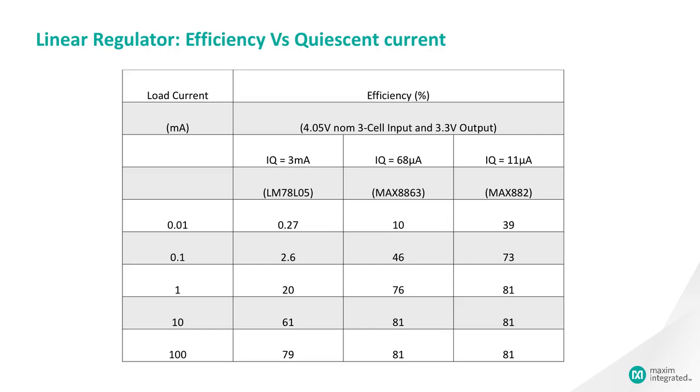Load currents often vary widely, so the net effect of quiescent current on battery life depends on a combination of these two cases. The question is, which load occurs for the greatest amount of time? If load currents are small for most of the time, then one must ensure a low quiescent current to achieve high efficiency.